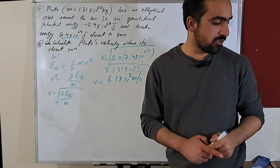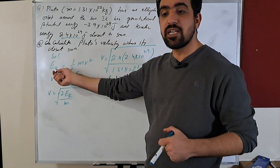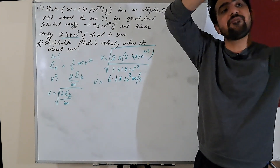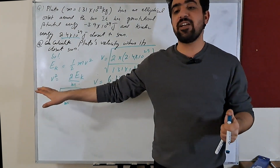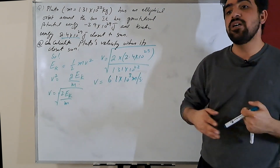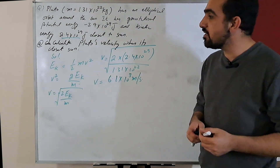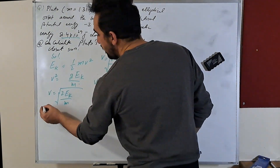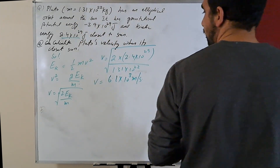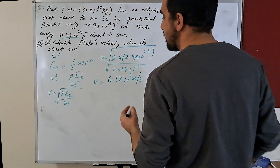Now that you know the speed of Pluto and the kinetic energy, at any other point you can find the potential energy, and from that figure out the total energy. From the total energy and kinetic energy, you can find anything you want about Pluto — its speed, its orbital period, anything. Part B deals with when Pluto is at a different distance from the Sun.